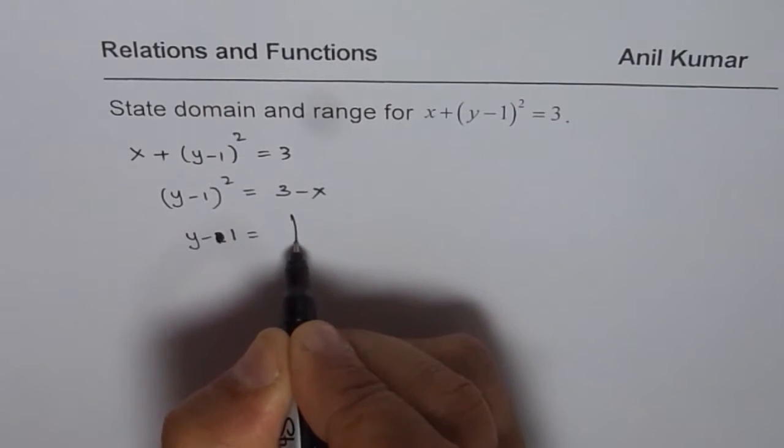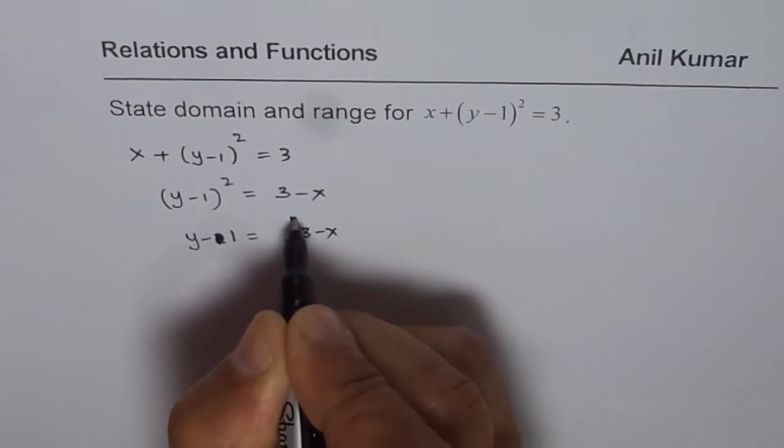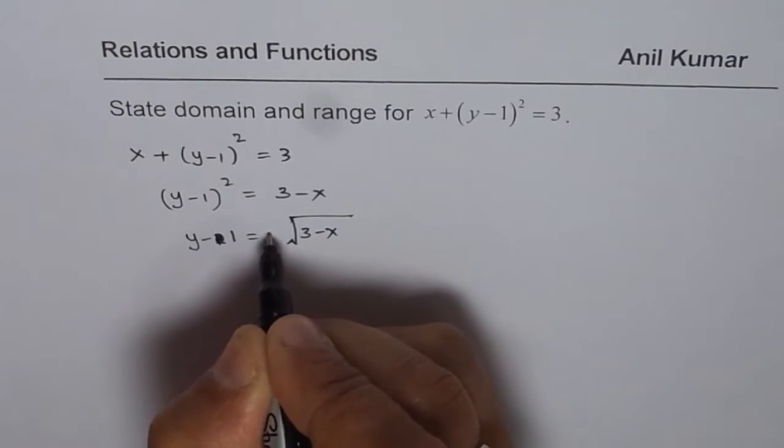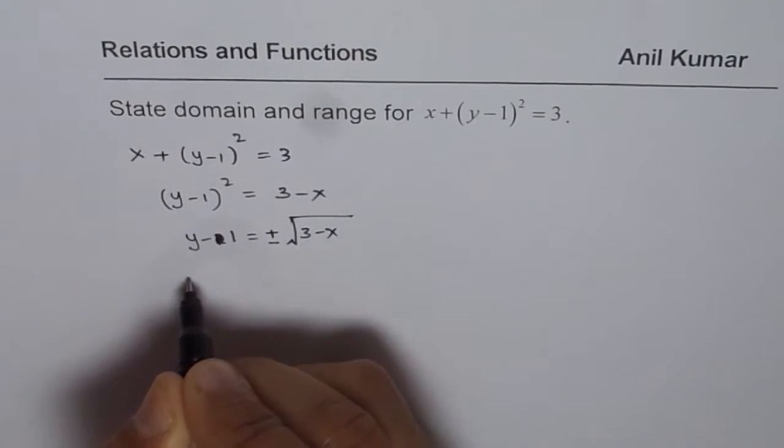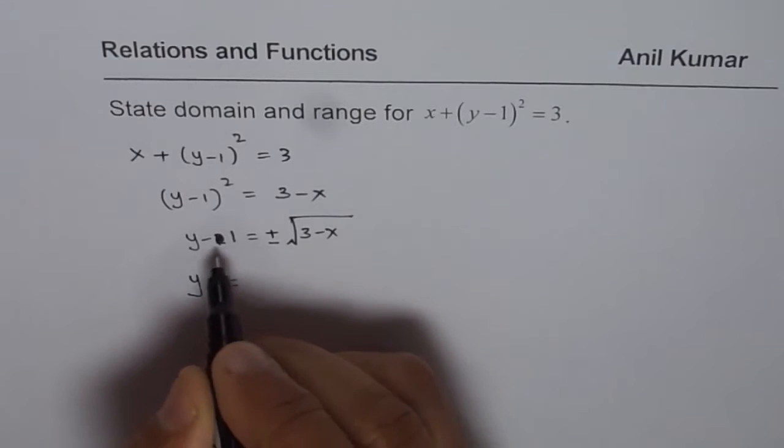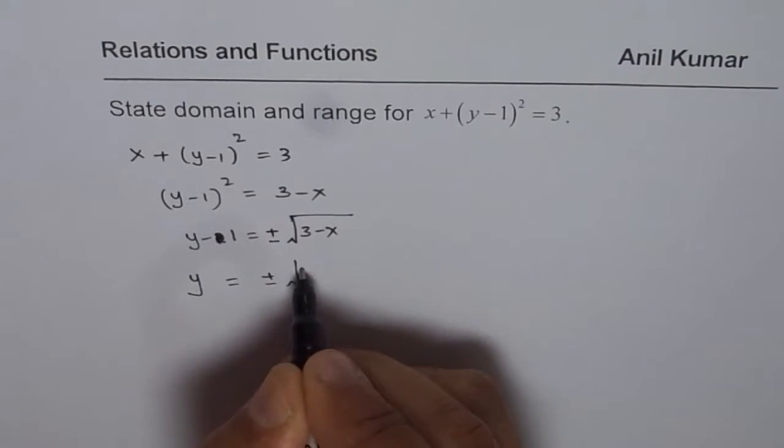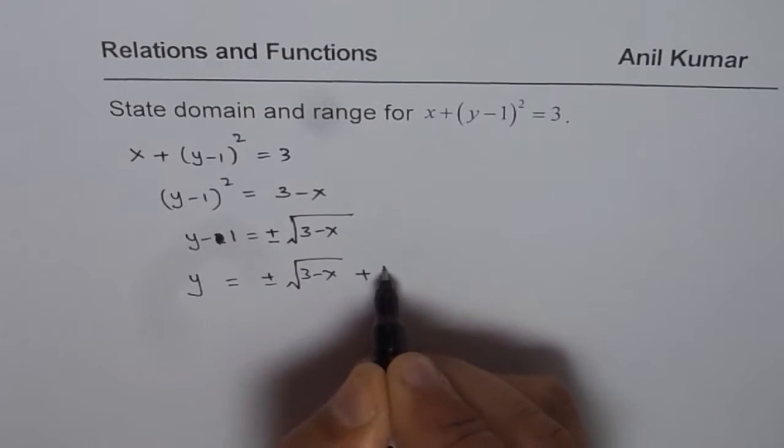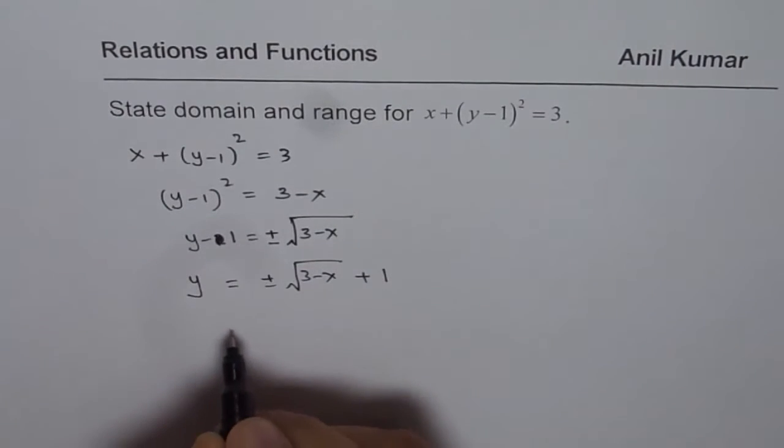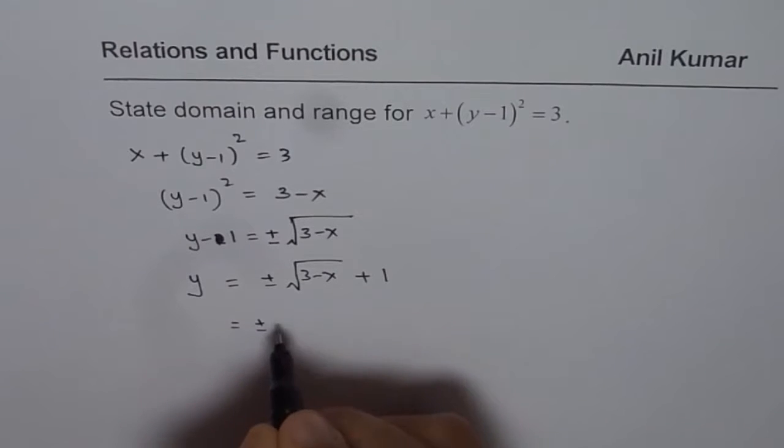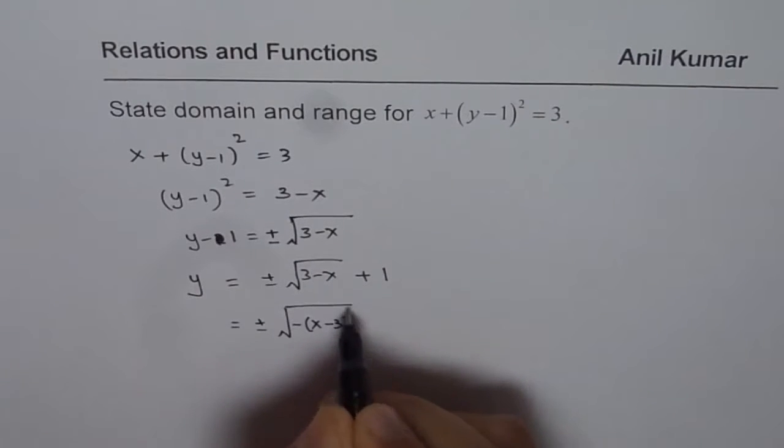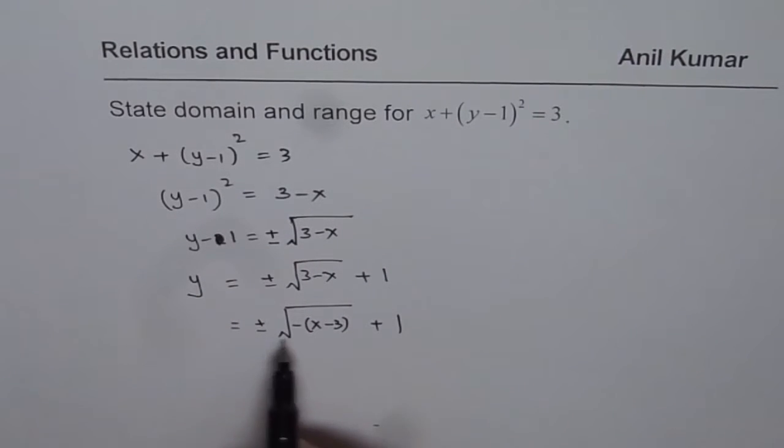y minus 1 equals to square root of 3 minus x. Whenever you do square root, you have to do plus and minus. Then you can say y equals to plus and minus square root of 3 minus x plus 1. Let me rearrange this. We could take minus common, we get x minus 3 plus 1.